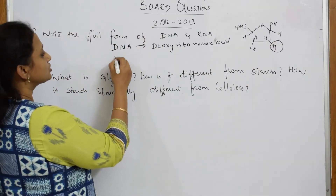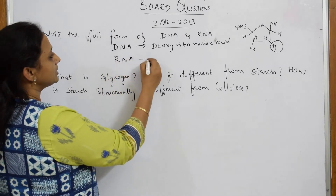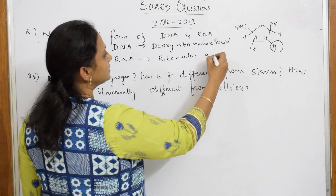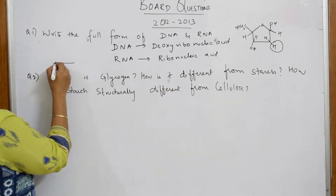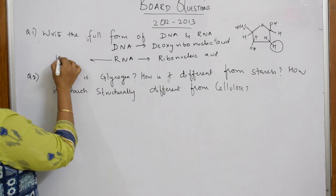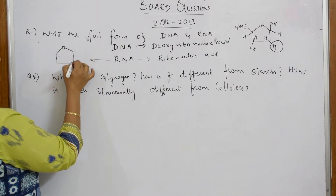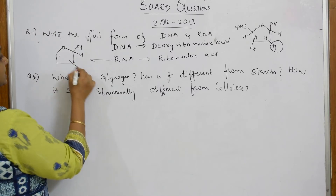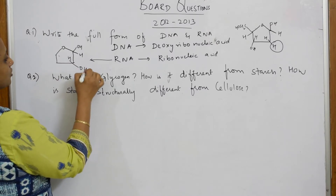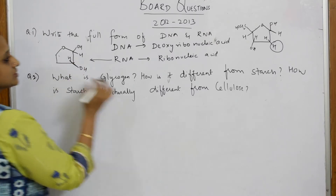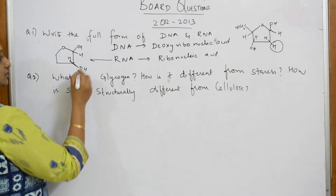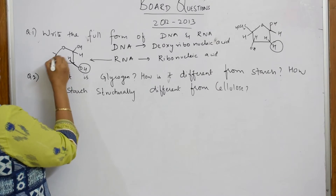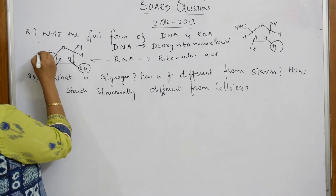When I come to RNA, the full form is ribonucleic acid. Again the same structure — the pentose sugar — but for ribonucleic acid, in the second carbon you have a hydroxyl group. That is the only structural difference between deoxy and RNA. The positions are: OH and H, hydrogen, and CH₂OH.